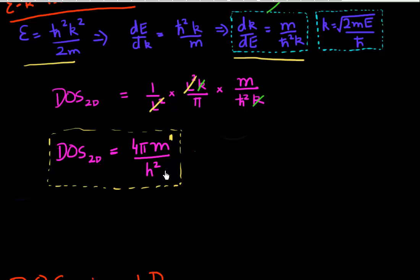I'm running out of time in this video, but in the next video we'll derive the density of states for one-dimensional and zero-dimensional semiconductors. Then we'll compare the energy dependence of the density of states for 3D, 2D, and 1D semiconductors and ponder what it means.